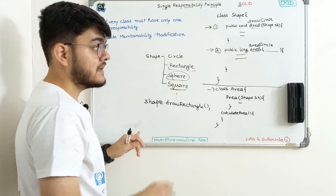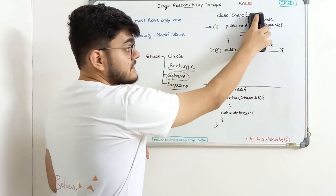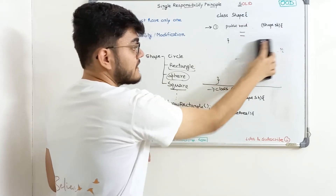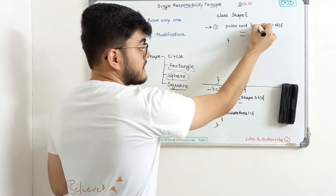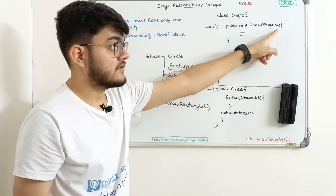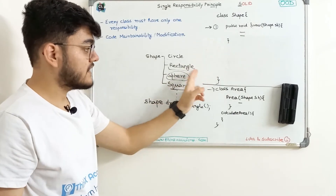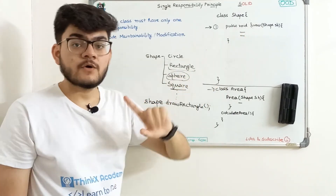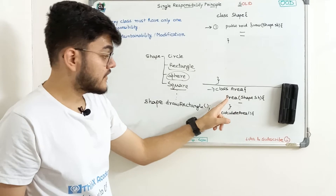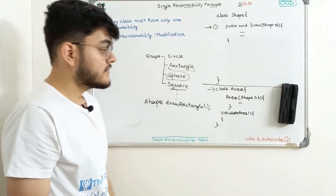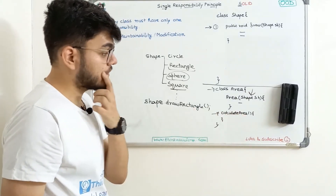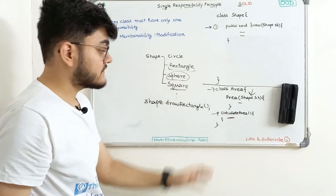How can we implement Single Responsibility here? Simple: the Shape class will have only one function — the draw function. I remove the area function from it, so Shape has only one responsibility: to draw the figure, whether it's a circle, rectangle, or square. Then I create a separate Area class that takes the shape in its constructor and has a calculate area function to compute the area.